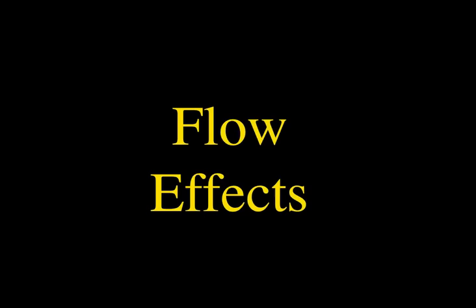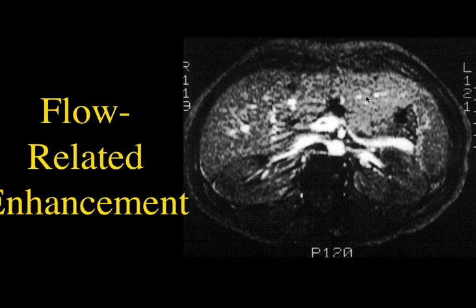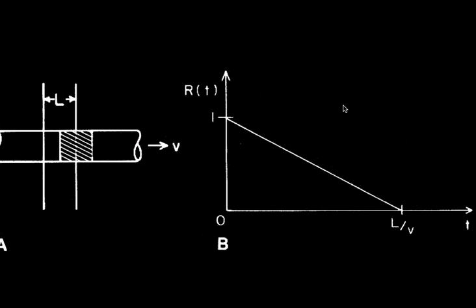What I'd like to do is talk a little bit about flow effects with MR. There are some sequences, specifically the gradient echo type sequences, where you can get a lot of flow-related enhancement, like we're seeing here in this abdominal image — another very old image where we can see both arterial and venous flow-related enhancement in the great vessels as well as within the vessels within the liver itself.